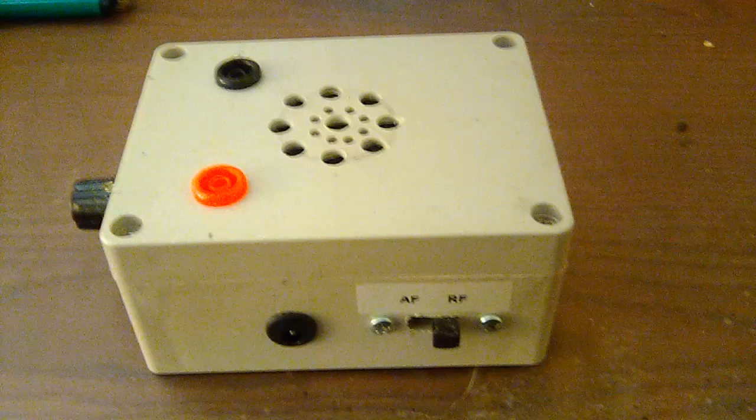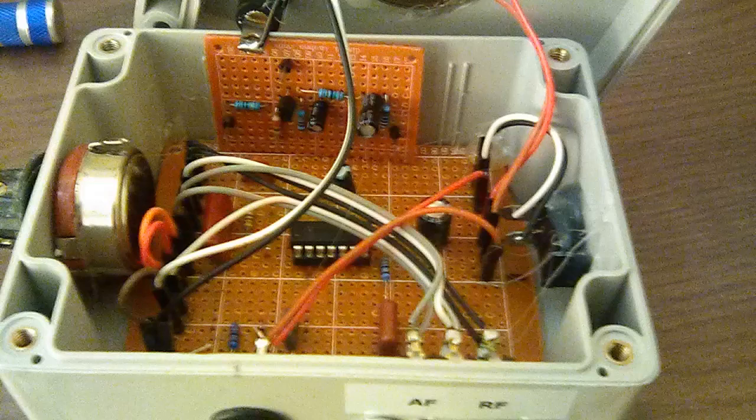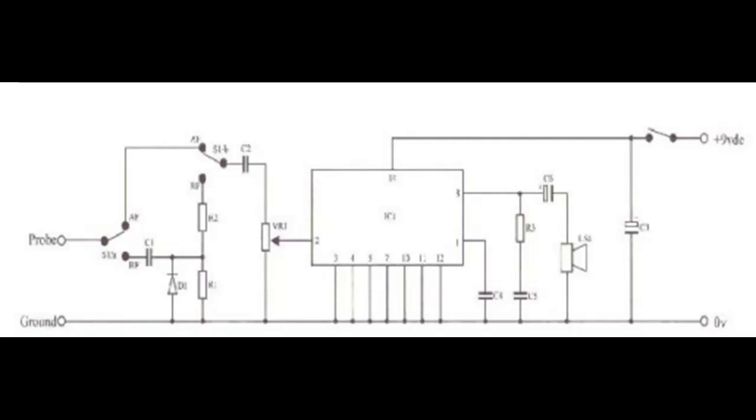I used that particular case because that was the case I had on hand at the time. This is what the inside looks like - just a piece of perfboard at the bottom with the circuit on it. This was the simple circuit I found on the internet, just using an LM380 chip. Audio spread directly in, RF went through the diode and the two resistors there on the left-hand side.